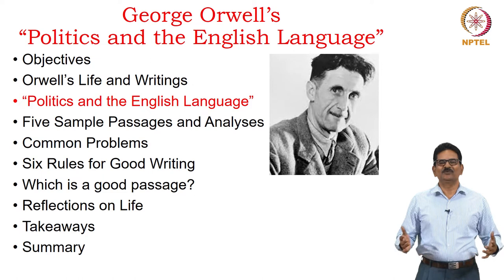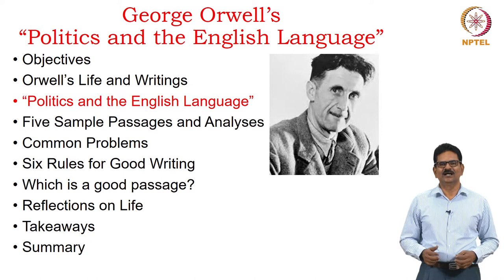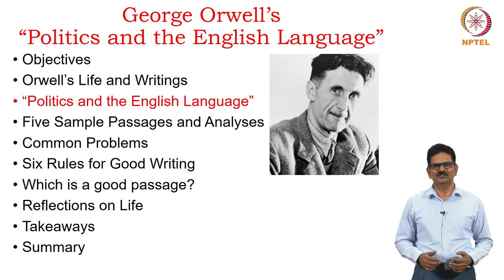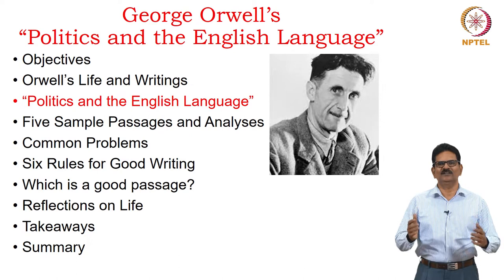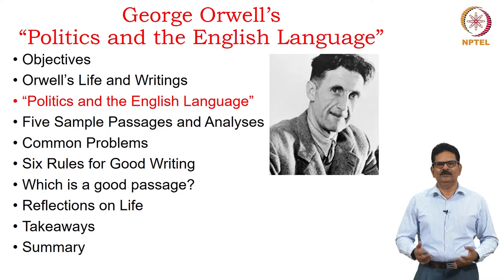Hello friends, we are moving into the fourth week of our course on Literature and Life. Our text now is George Orwell's Politics and the English Language. We will look into the objectives, Orwell's life and writings, and then see the text. We will focus on specific details like the five samples and their analysis, common problems in the use of English, and most importantly, the six golden rules for good writing given by Orwell.